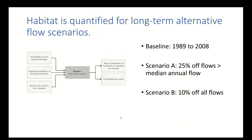Habitat curves are used for long-term automated flow scenarios. We worked with a historic flow record from 1989 to 2008. In Scenario A, we took 25% off all flows that were above the median annual flow; in Scenario B, we took 10% off all flows across the board.